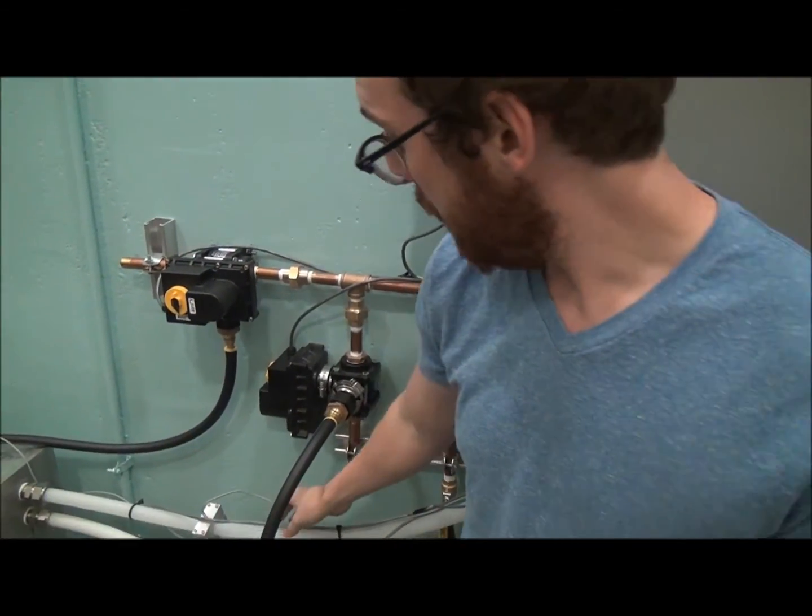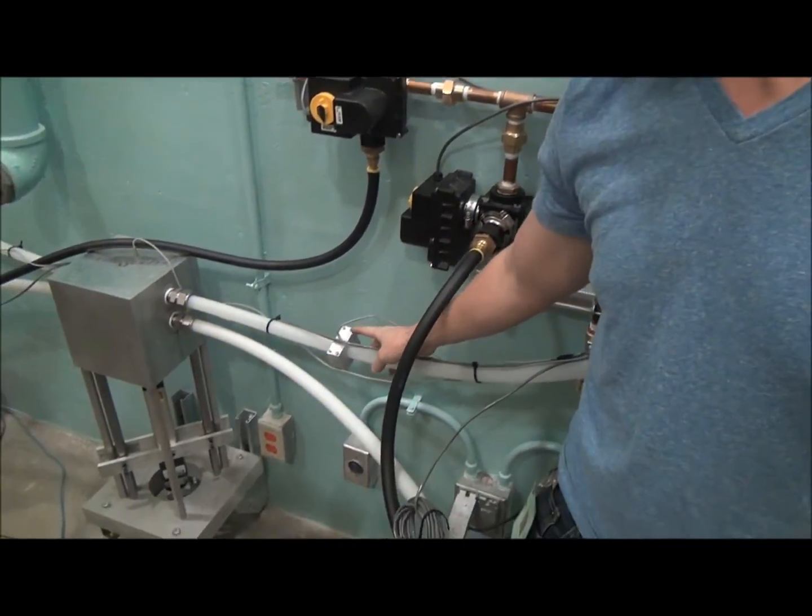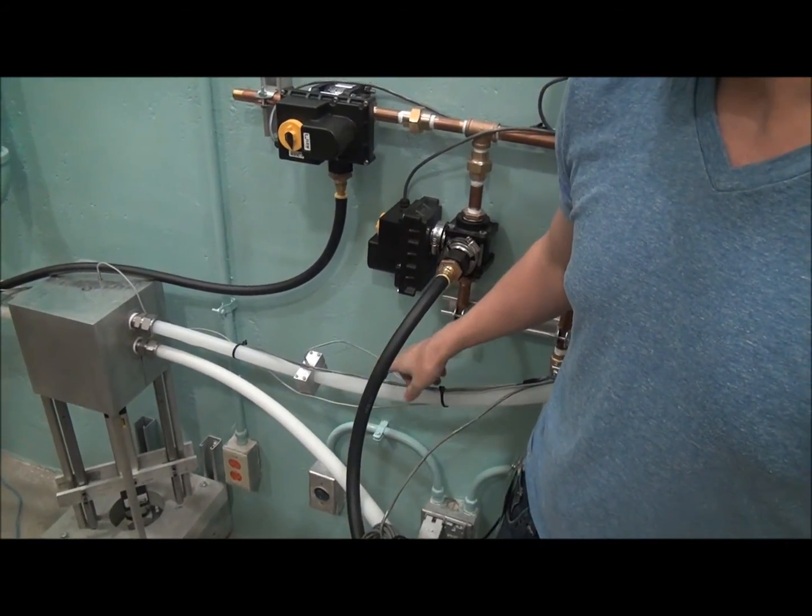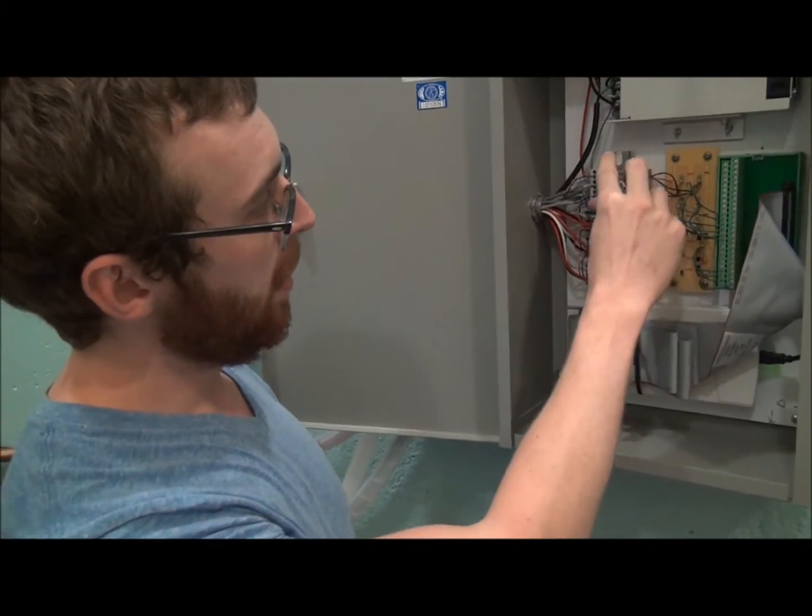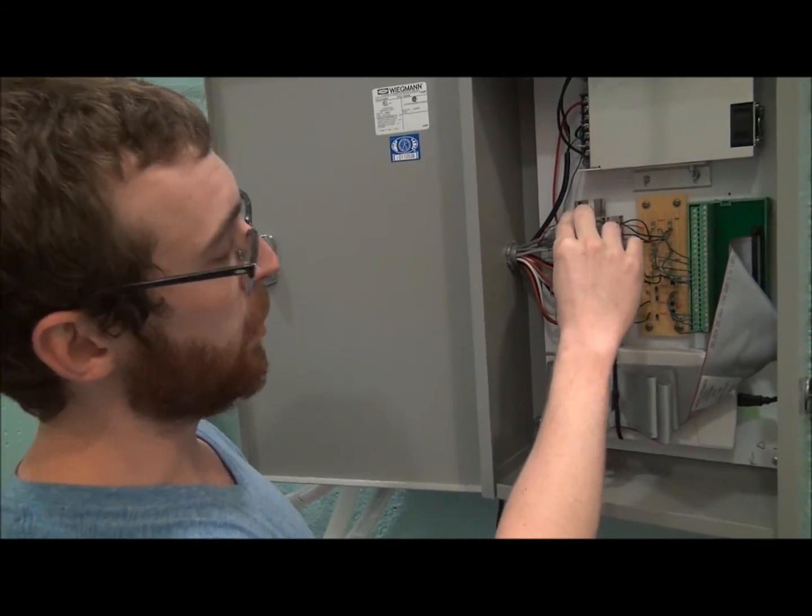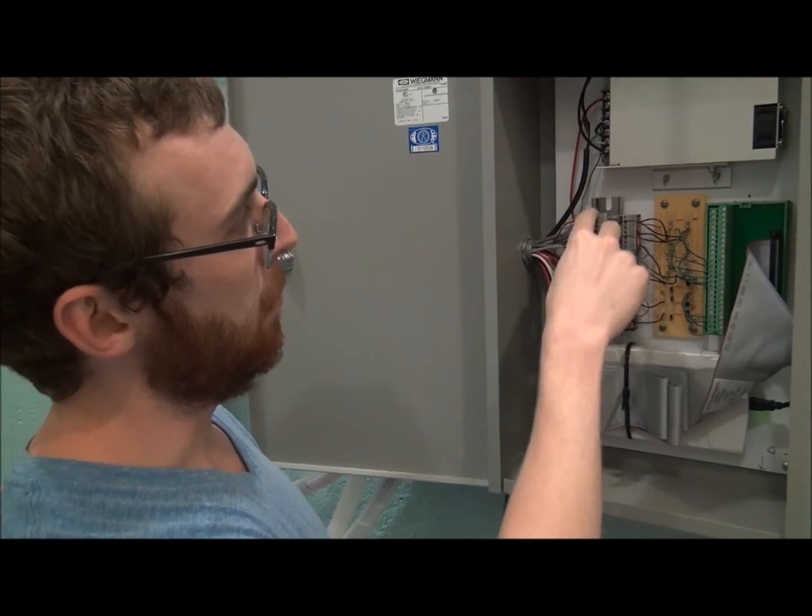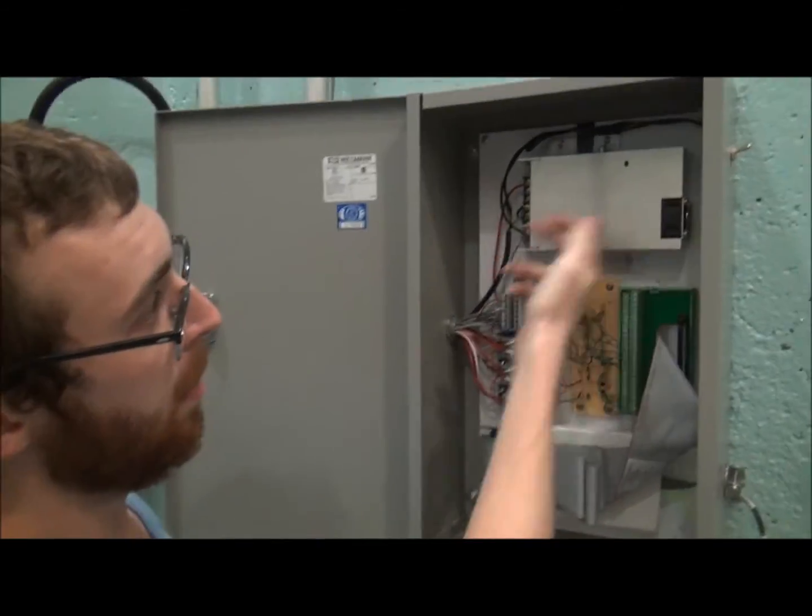Besides that, if you'll notice along the pneumatic lines, we have these sensors. We have six of them all together to monitor the throughput of the sample as it's moving. All the sensors in and out go through this little signal block here. And this is our power, and that's basically the controls.